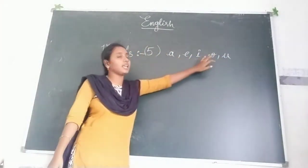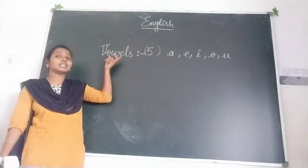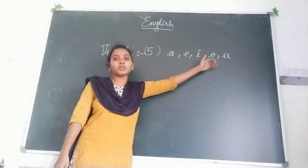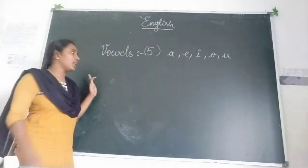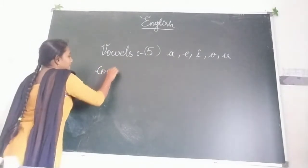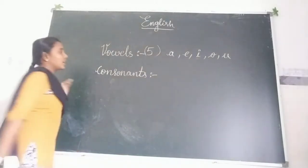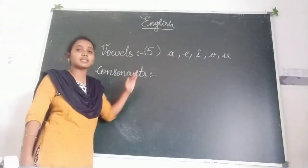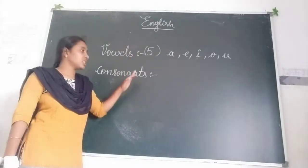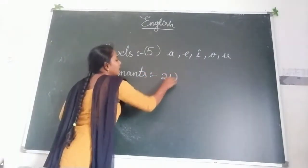A, E, I, O, U. After alphabet, leave one line and write 'Vowels'. Keep the number five and write A, E, I, O, U. And the remaining letters all come under consonants children. Consonants — from 26 letters we have five vowels, that means 26 minus 5 equals 21 consonants.